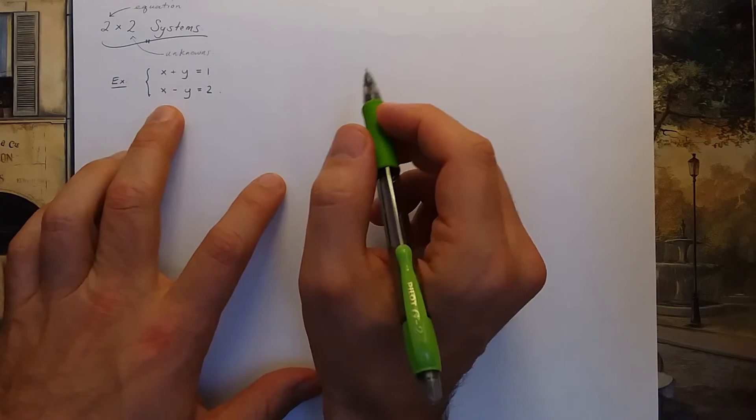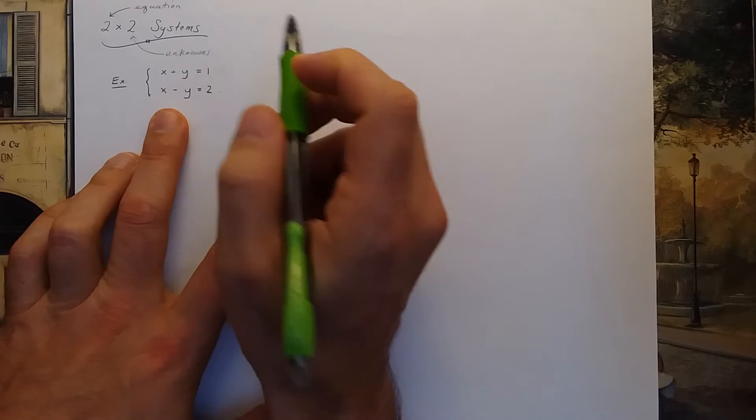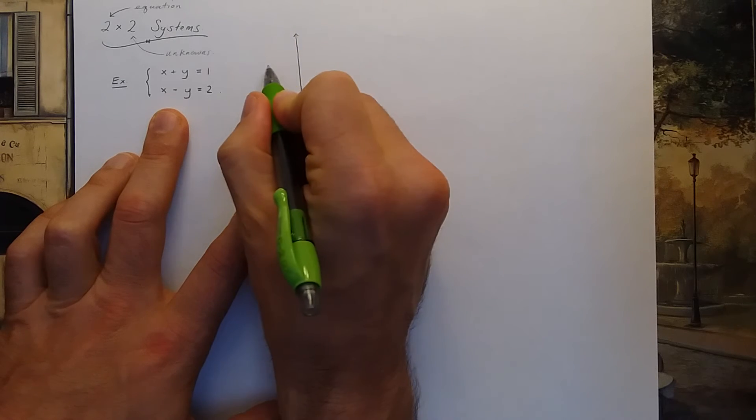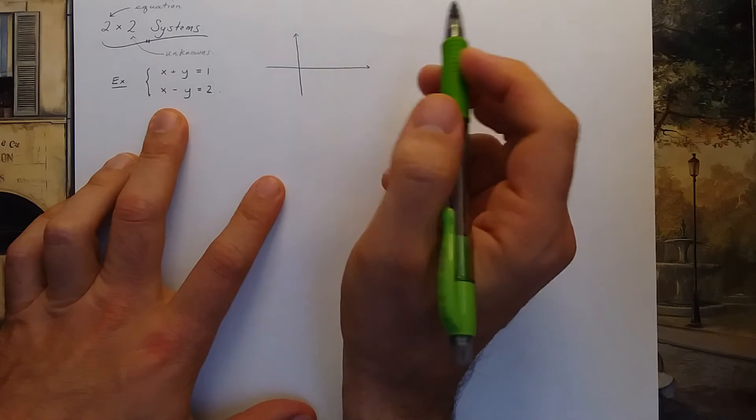You can plot these two equations, these are two linear equations, they're two lines. So you could plot the two lines individually, and where the two lines cross is the x and y coordinate that we're looking for.